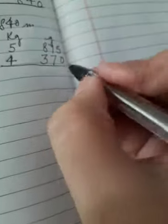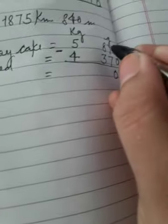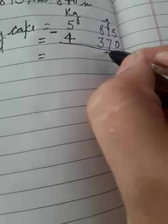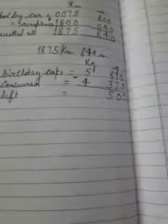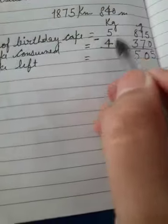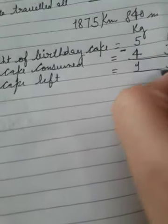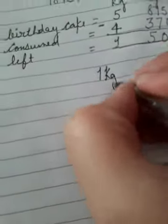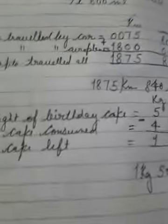We need to find how much cake remained. We need to find remaining, so we subtract. We will put the sign of subtraction and simply cut. Write cake left, how much cake remained. Five minus zero is five. Seven minus seven is zero. Eight minus three is five. Five minus four is one. Cake left is 1 kg 505 g.